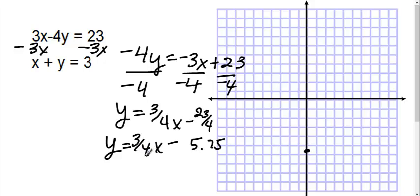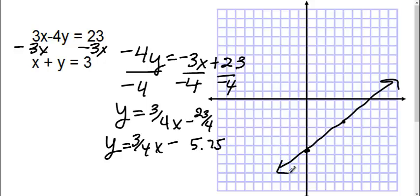Now my slope here is 3 fourths. So up 3 — 1, 2, 3 — and to the right 4 — 1, 2, 3, 4. I'm going to connect those dots to form my line.